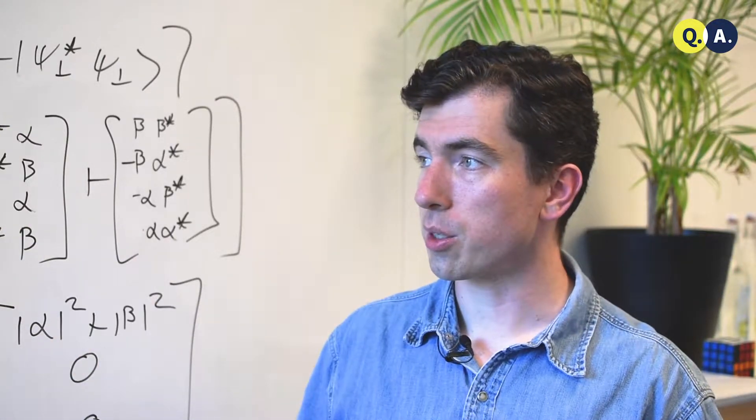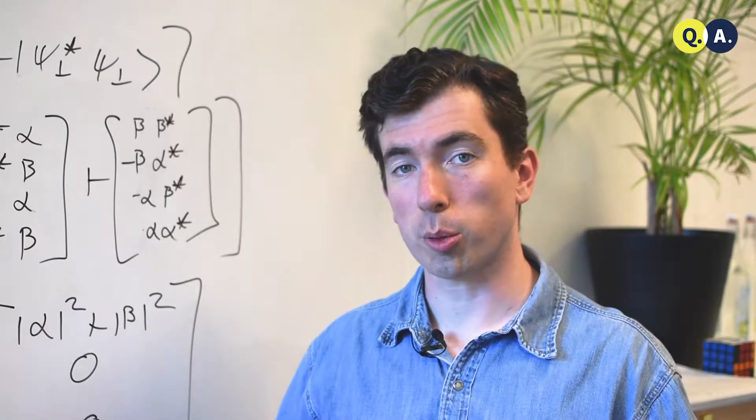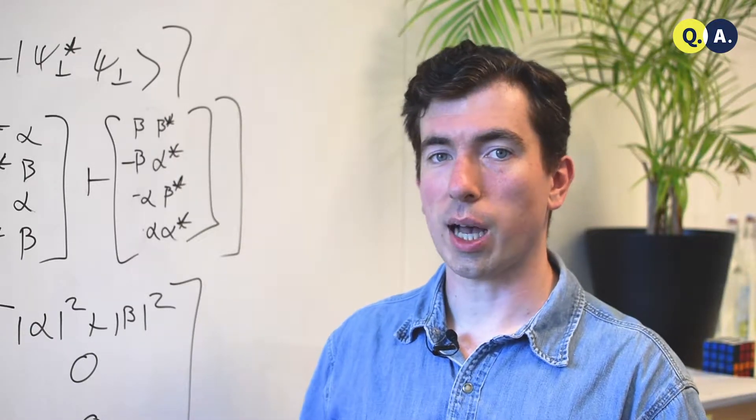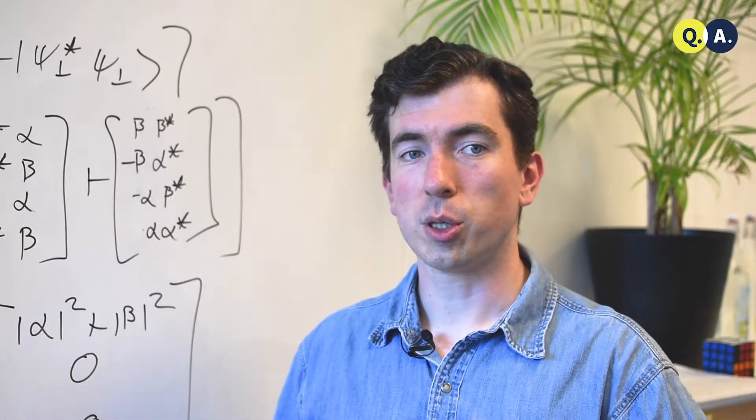Now, if she measures instead in the basis psi star, psi star perp, she can tell that Bob has the state psi or psi perp, depending on her measurement result.